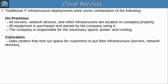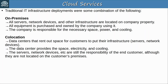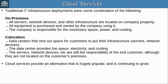Of course, devices such as desktops, wireless access points, etc. are still in the company's building, but servers and most network infrastructure will be in the co-location data center. The data center provides the space, electricity and cooling for the devices, as well as the physical security. The servers, network devices, etc. are still the responsibility of the end customer, although they are not located on the customer's premises. So traditionally a company would use on-premises, or a combination of on-premises and co-location. But cloud services provide an alternative that is hugely popular nowadays and is continuing to grow.